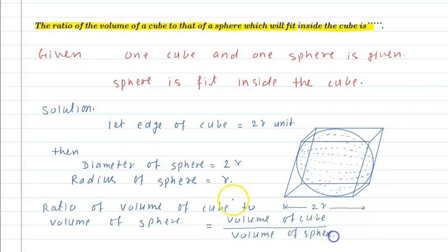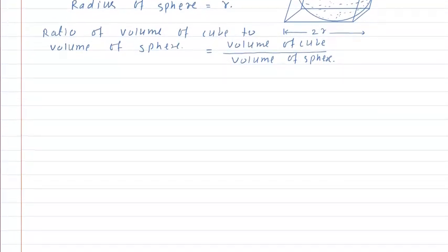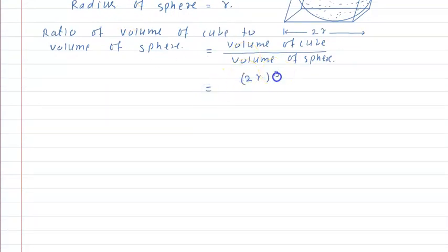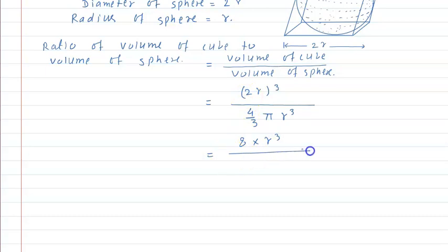The volume of the cube — since the side (a) is 2R — so the volume becomes (2R)³, which equals 8R³. Divided by the volume of the sphere, which is (4/3)πr³, because the radius of the sphere is small r. So it becomes 8R³ divided by (4/3)πR³.